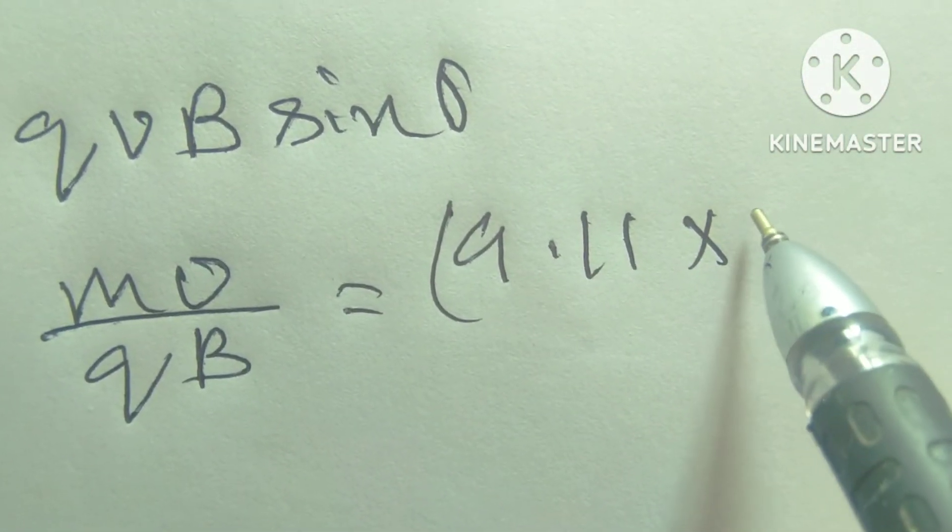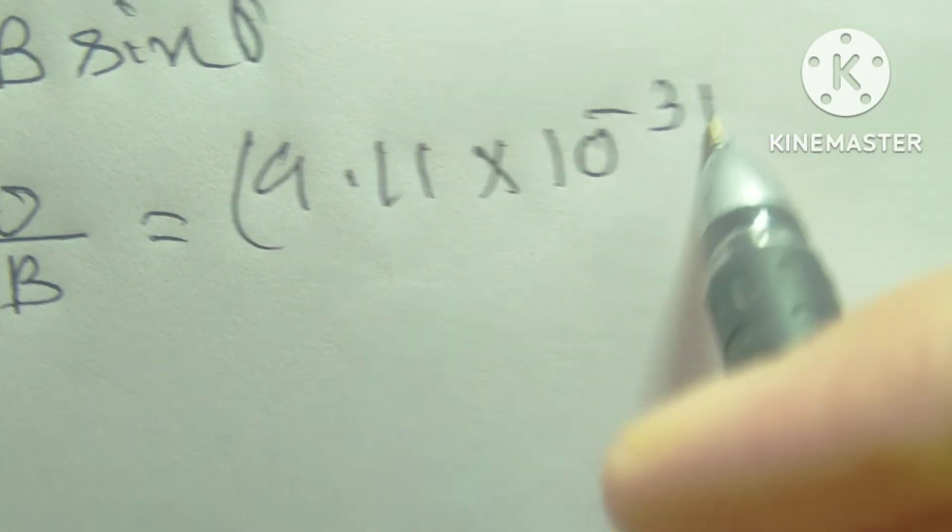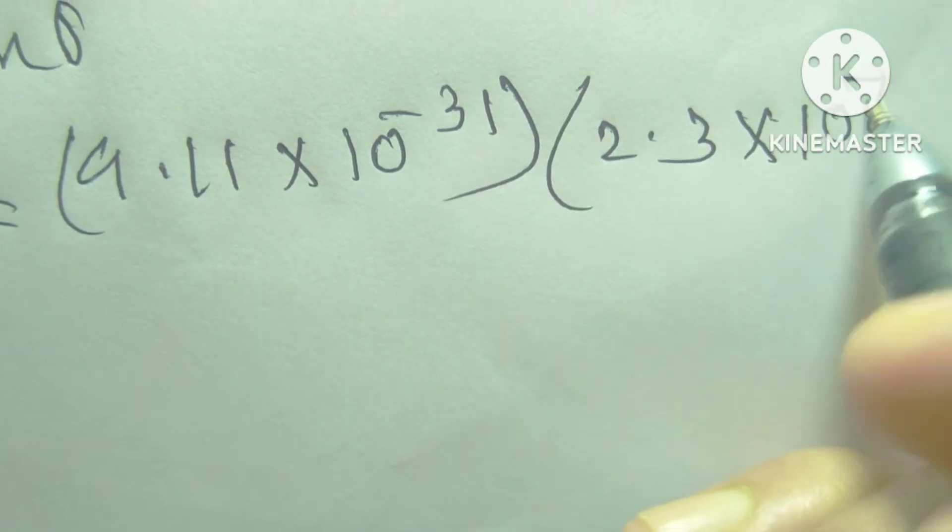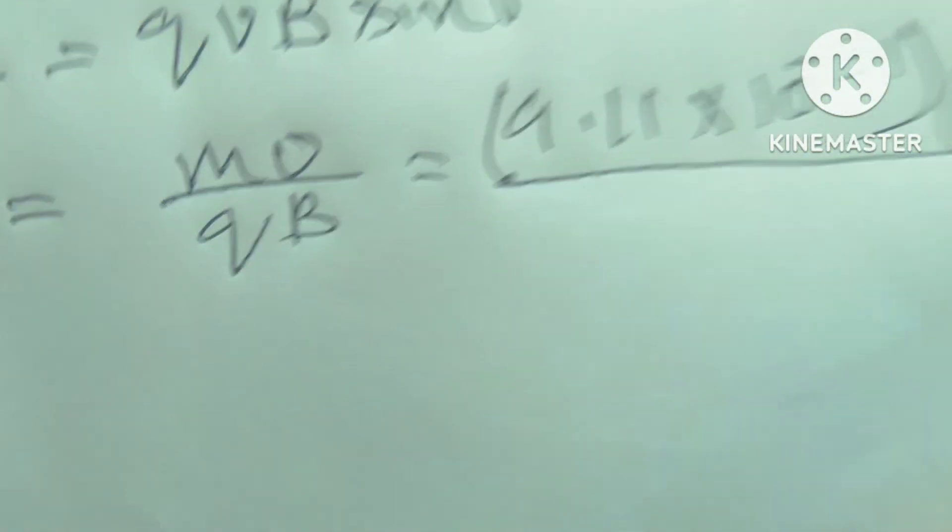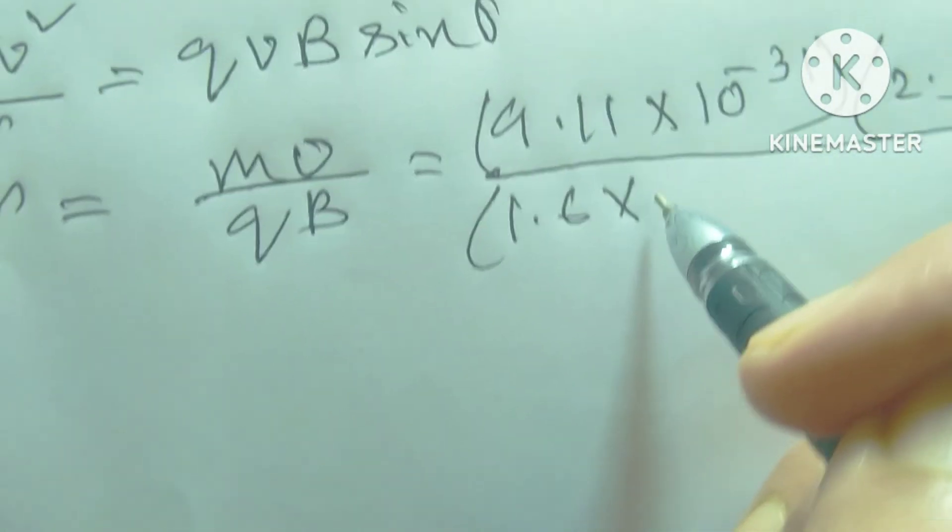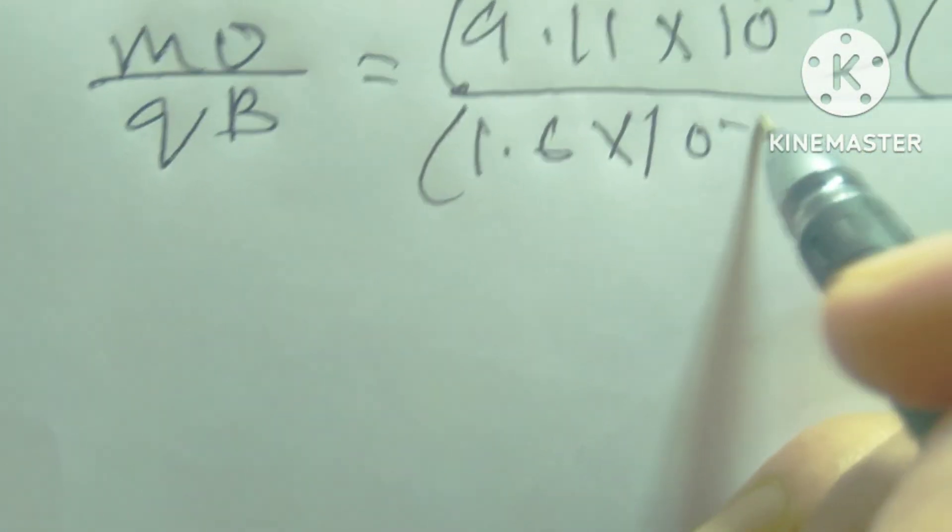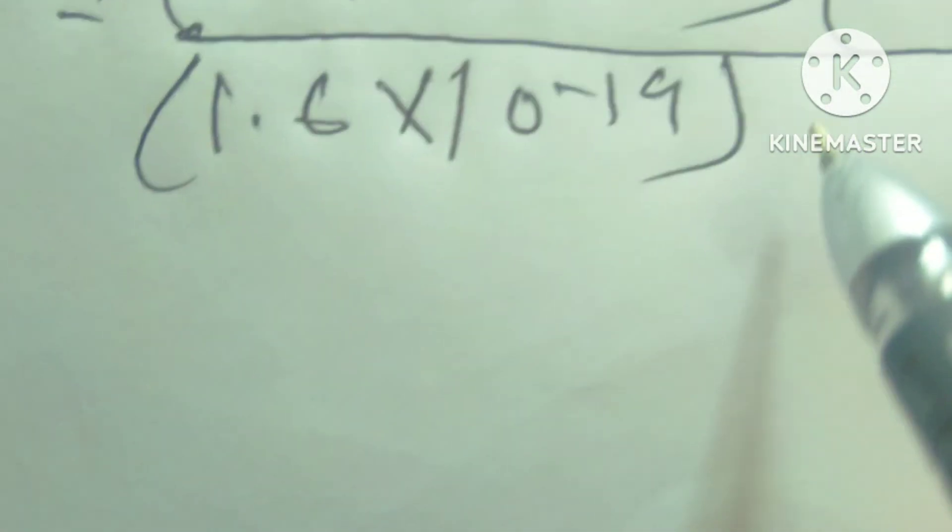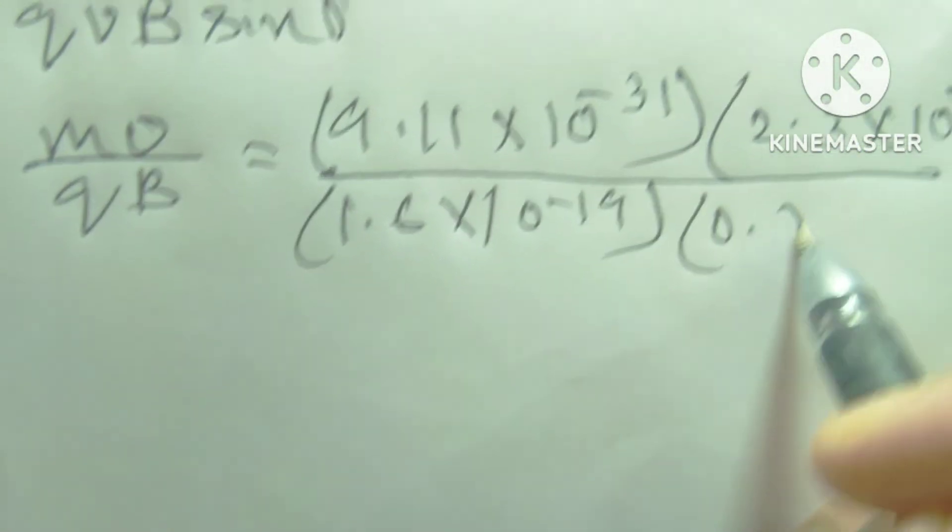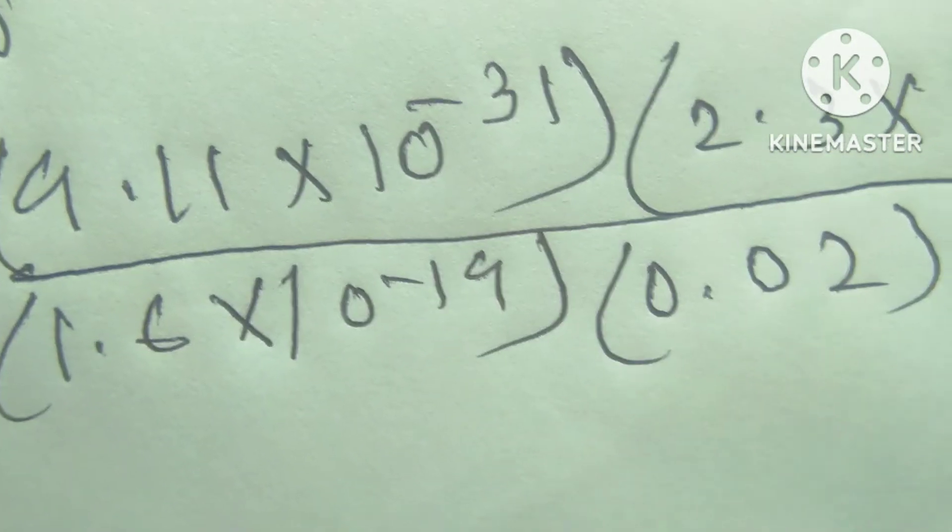Mass 9.11 into 10 to the power minus 31 kg, and V equals 2.3 into 10 to the power 7, divided by Q equals 1.6 into 10 to the power minus 19 into 0.02, equals r.